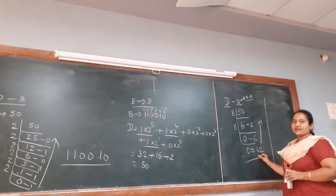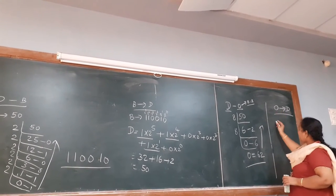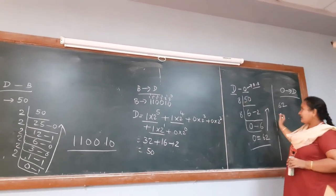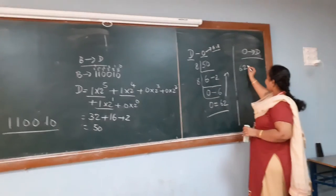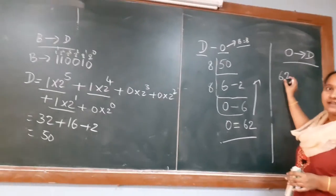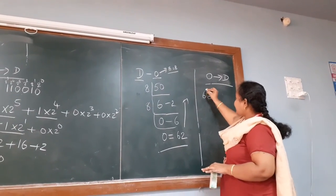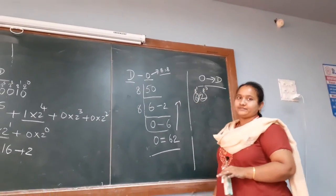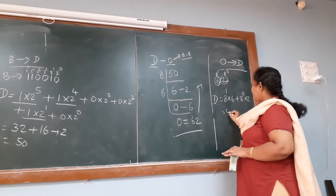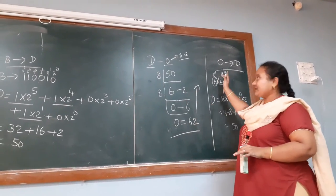To verify, I am converting octal 62 back to decimal. For octal to decimal conversion, we multiply each digit of the octal value by powers of 8: 8 power 0 and 8 power 1. The decimal value equals 8¹×6 + 8⁰×2 = 48 + 2 = 50. Both values are verified. Decimal to octal and octal to decimal conversions are complete.